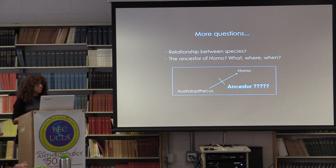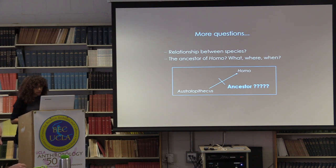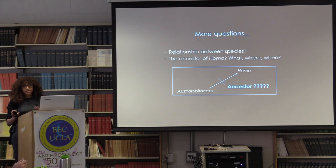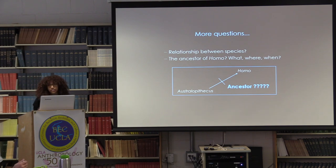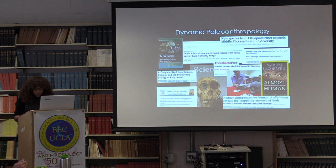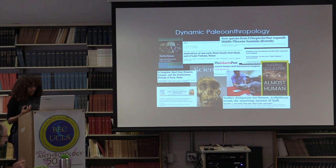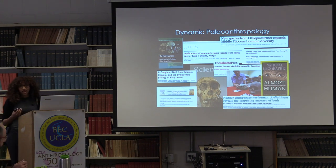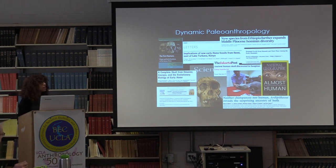These questions and debates have led to a number of studies focused on teasing apart within- and between-species variation. However, relationships remain ambiguous and issues remain largely unresolved. The unclear boundary and morphological overlap that exists between Australopithecus and Homo amplifies this problem, making the study of ancestor-descendant relationships a difficult task.